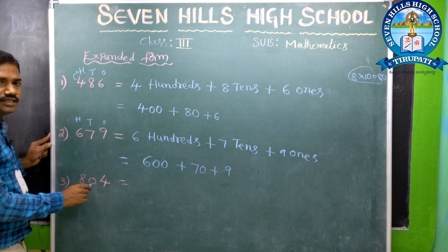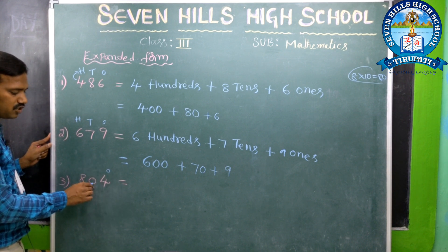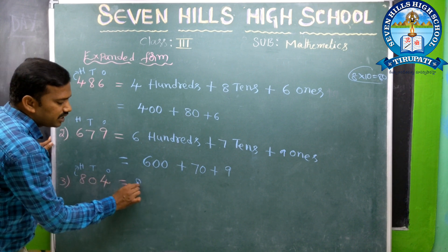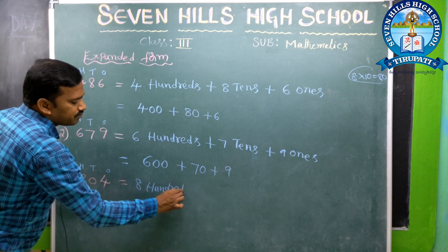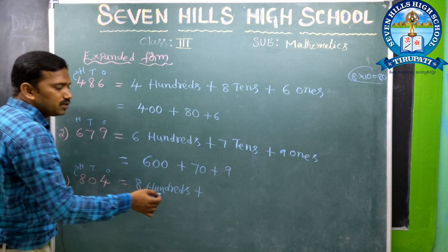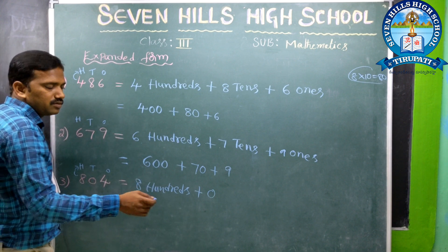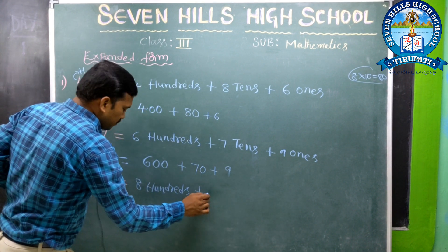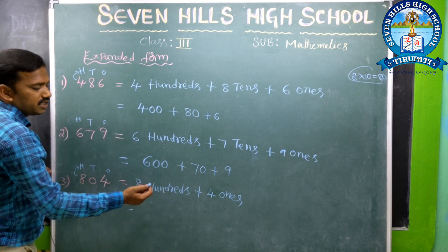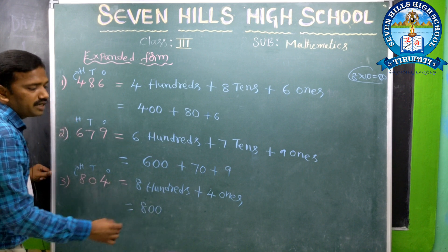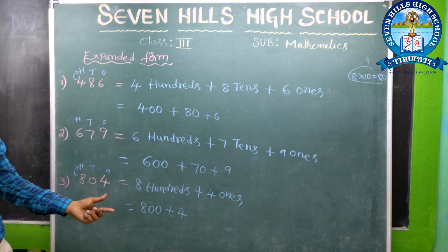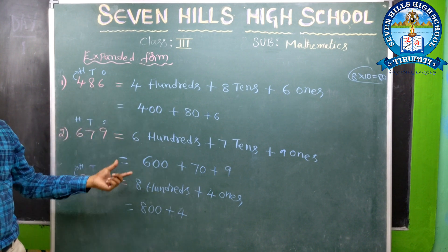Third question: 804. 4 is in the 1s place, 0 is in the 10s place, 8 is in the 100s place. 8 hundreds plus 0 tens — here there are no tens, so no need to write 0 tens — plus 4 ones. 8 hundreds means 800, 4 ones means 4. So 804 expanded form is 800 + 4. This is the expanded form for the given numbers.